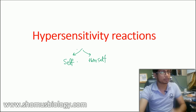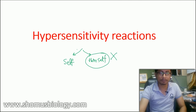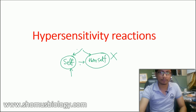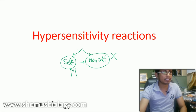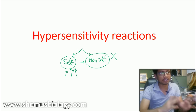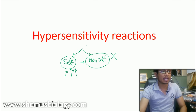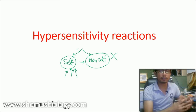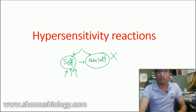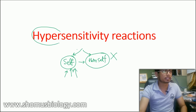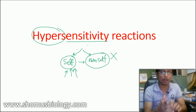Sometimes the immune system fails to detect non-self — that creates one set of problems. But sometimes the immune system detects self as non-self, pretending that self molecules are non-self and starting immune reactions against those self molecules, destroying our own body cells. Those severe, unwanted immune reactions — that hyperness of our immunity — is known as hypersensitivity.